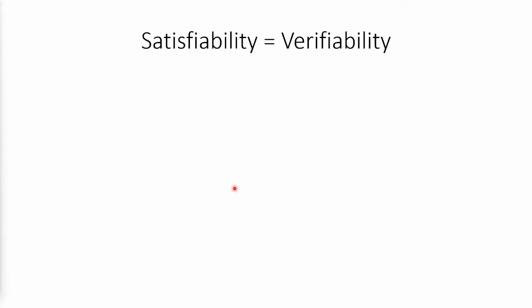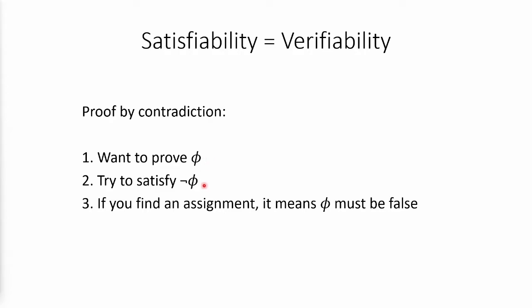Now, I would like to point out that if we're able to prove satisfiability, we can also actually make proofs. Say we have some formula F that we want to prove, we can try to satisfy its negation, so it's like proof by contradiction. If we can find a counter example, it means that the original formula is false, otherwise it means that it's true.